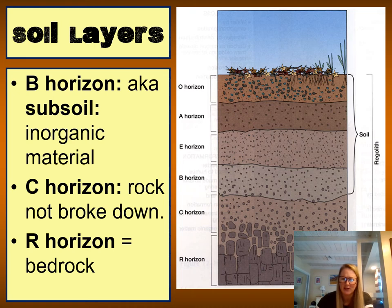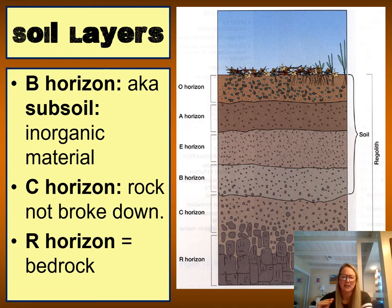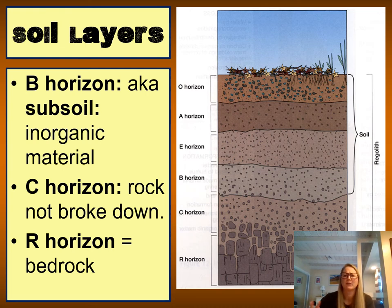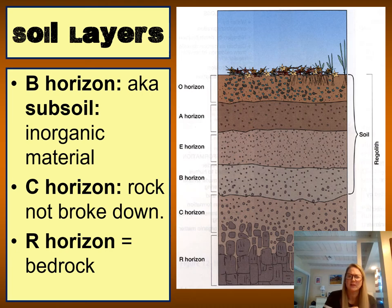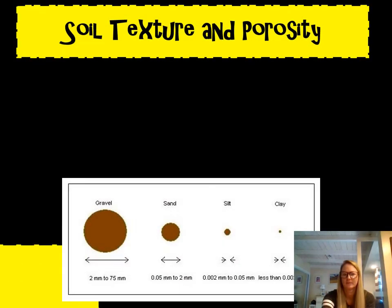Students often ask about the E horizon. These are just the basic layers you need to know: the O, A, B, C, and bedrock. However, if you go to different areas of the world or different biomes and dig, there may be additional layers or some layers may be absent. As a general rule, know these layers but understand that in different places of the world they may vary.